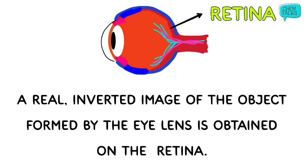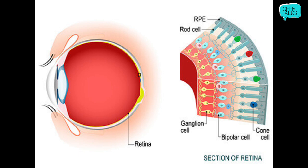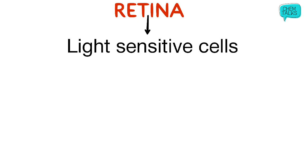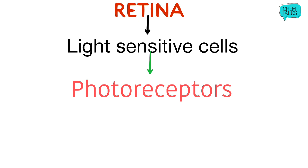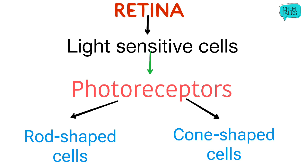Now we need to understand the retina in detail. What is present in the retina? A microscopic section of the retina is being shown to you. From this section, we have to study two types of cells particularly — rod cells and cone cells. The names are given to these cells according to their shapes. We are saying that retina is a light-sensitive screen because the retina is made up of light-sensitive cells, which are also called photoreceptors. We have two types of photoreceptors: rod-shaped cells and cone-shaped cells.